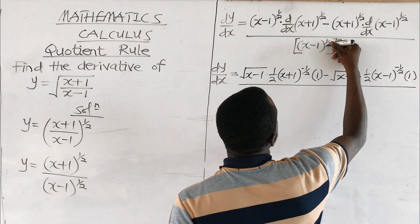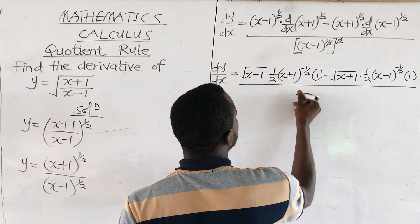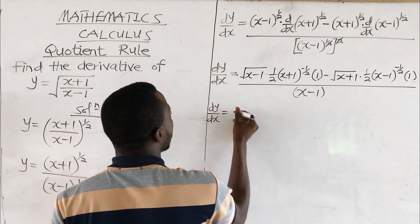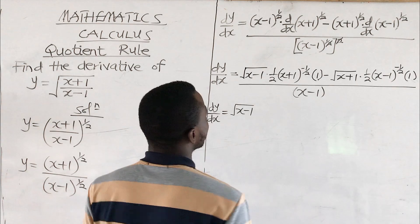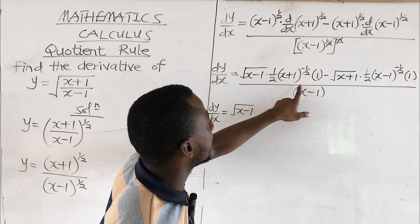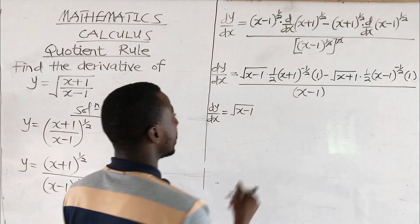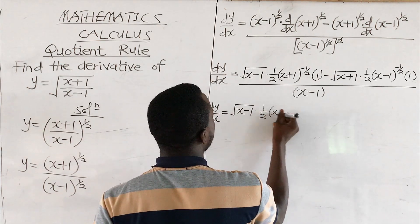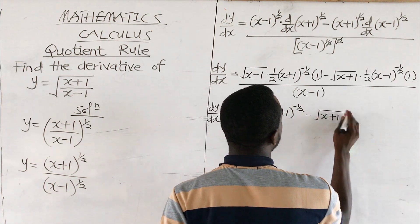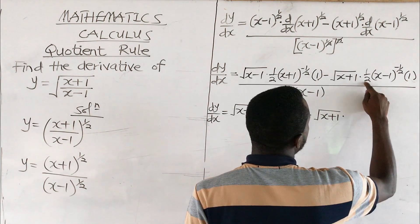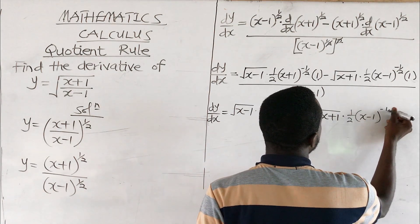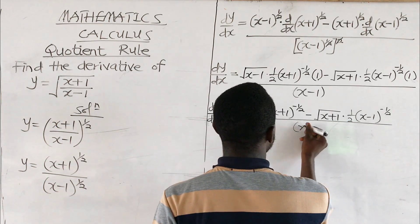All over — from here this cancels down, leaving x minus 1. So dy over dx: we still have root of (x minus 1). Then half times (x plus 1) to the minus half, times 1, gives half times (x plus 1) to the minus half. Minus root of (x plus 1) also multiplying 1. So we have half times (x minus 1) to the minus half, all over x minus 1.